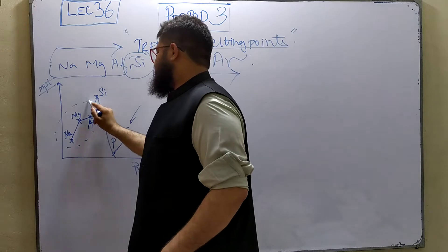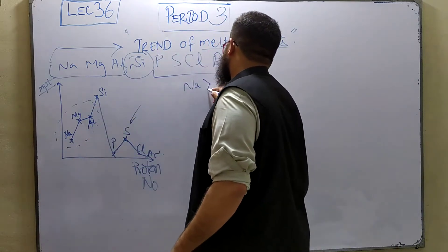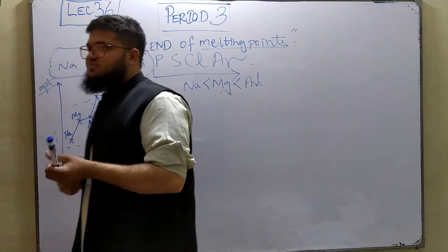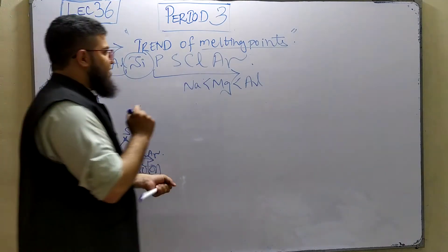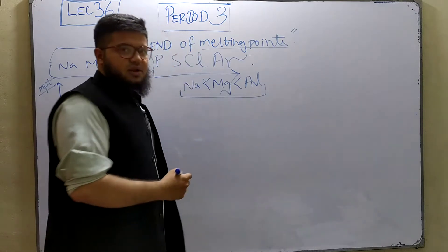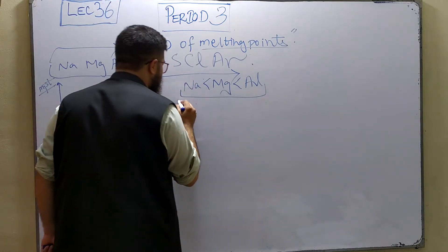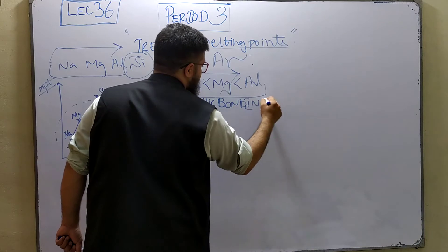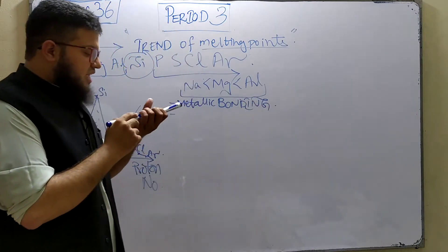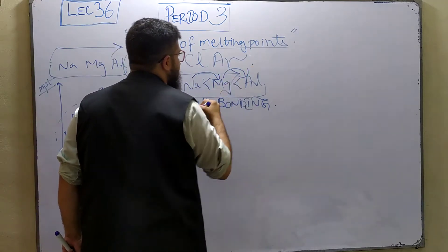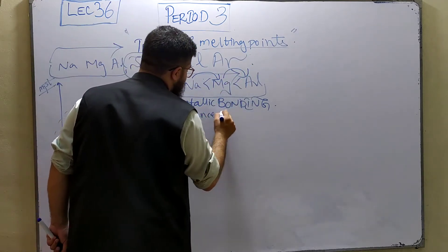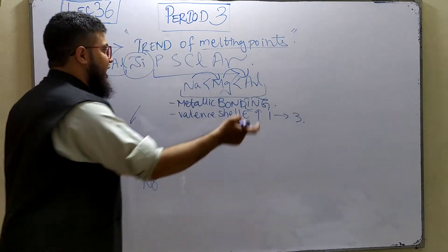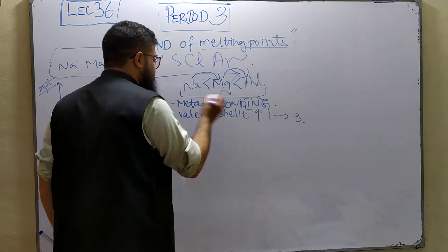For the first part — sodium, magnesium, and aluminum — why does aluminum have the highest melting point and sodium the least? The type of bonding on which the melting point depends in these three metals is metallic bonding. That is the first key term and earns the first mark. As you go from sodium to magnesium to aluminum, the valence shell electrons increase from one to three.